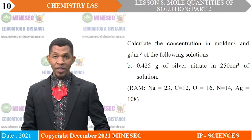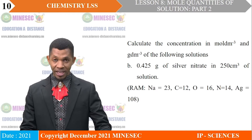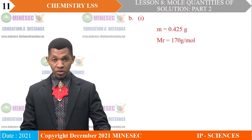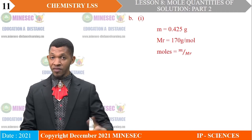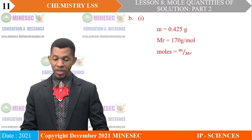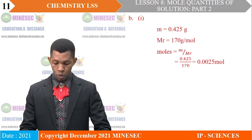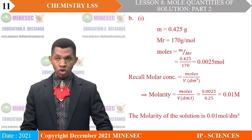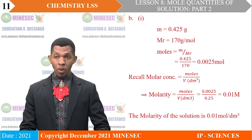B: 0.425 grams of silver nitrate in 250 cm³ of solution. The mass of the salt is 0.425 grams and the molar mass is 170 grams per mole. Number of moles equals given mass divided by molar mass: 0.425 ÷ 170 = 0.025 moles. Molar concentration equals moles divided by volume; substituting and simplifying, molarity equals 0.01 molar. The molarity of the solution is 0.01 moles per cubic decimeter.